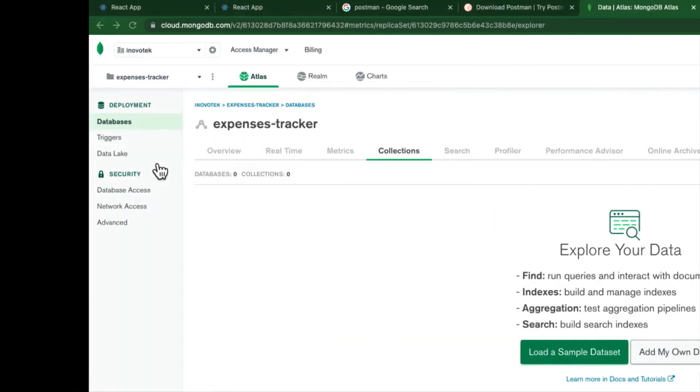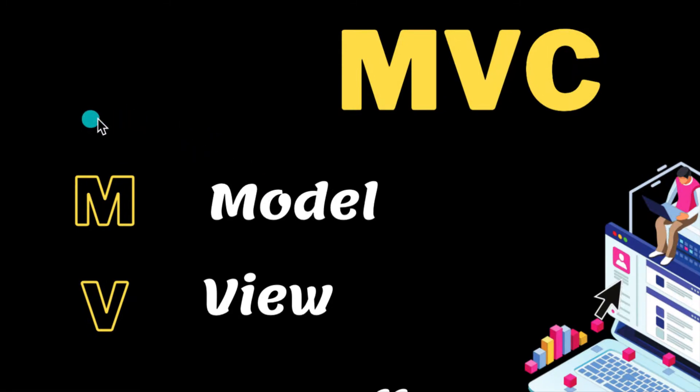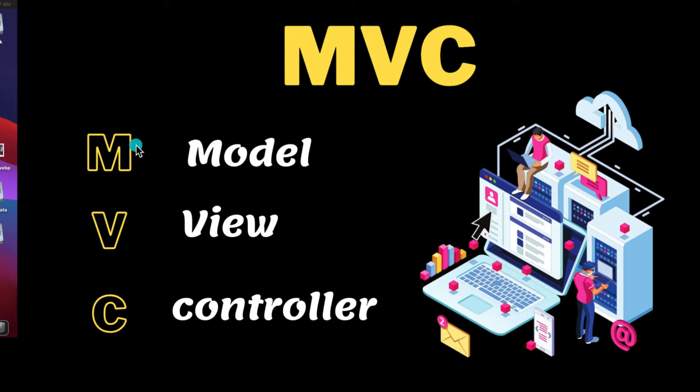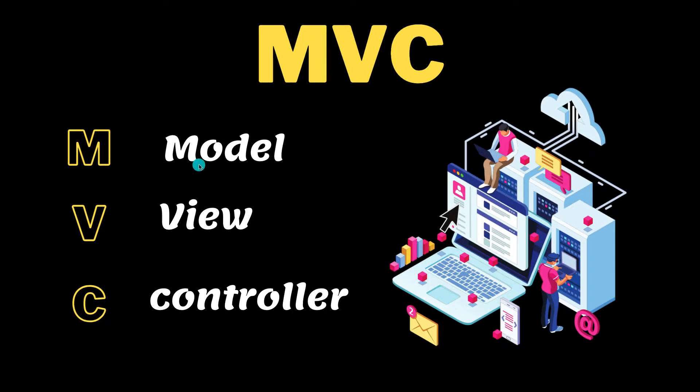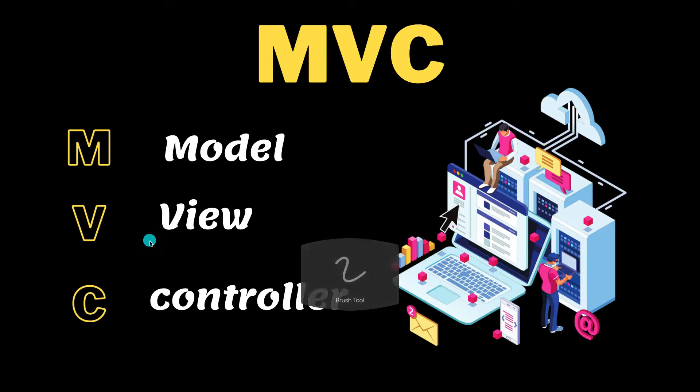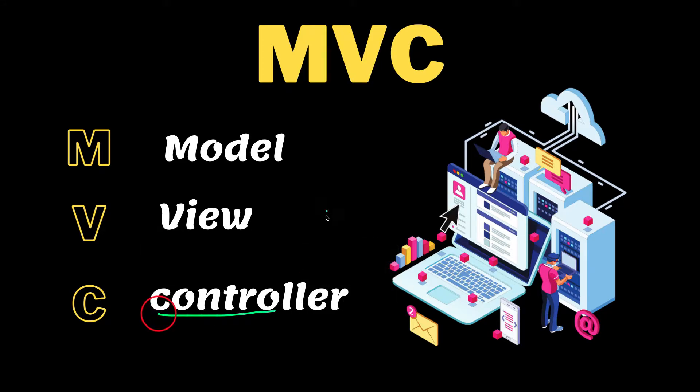MVC: M stands for Model, V stands for View, and C stands for Controller. Let's take them one by one.